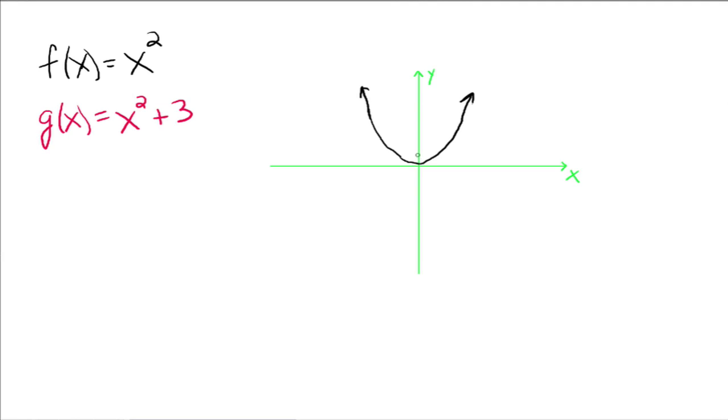So instead of this point down here being at the origin, it's going to be up here instead at 3. Every single point on the graph gets moved up 3 units. So there's g. Make sense?